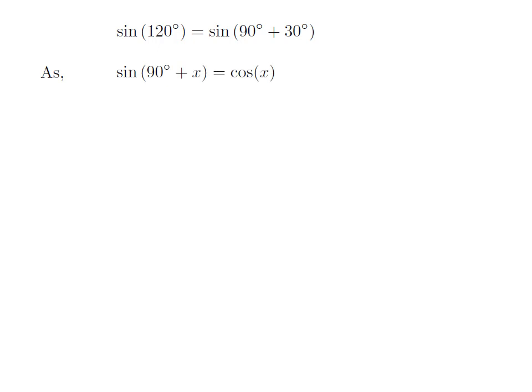As we know, the trigonometry identity sine of 90 degree plus x is equal to cosine of x.